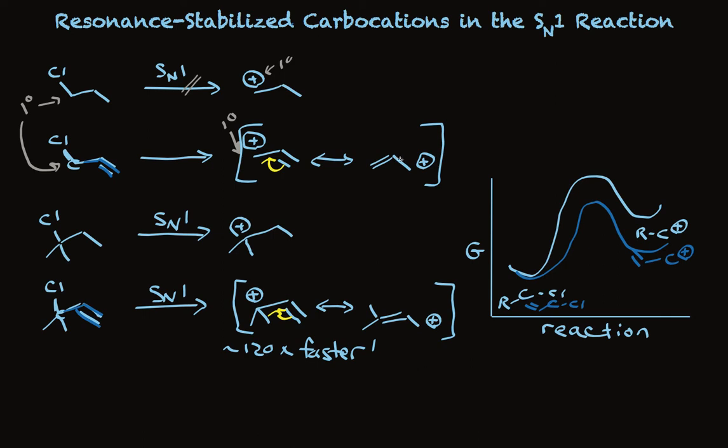So we're making a resonance-stabilized intermediate carbocation in the SN1 reaction in the cases where there's a double bond attached directly to the carbon that has the leaving group. In only those cases.